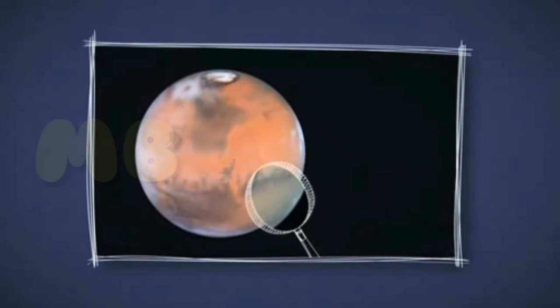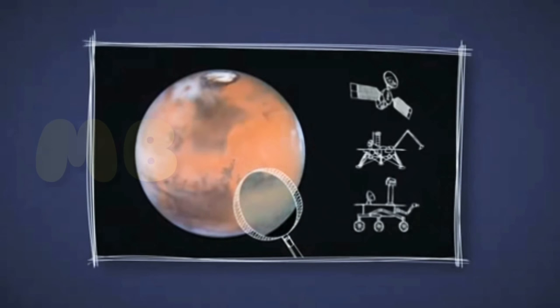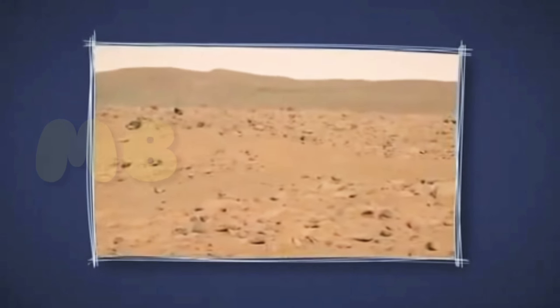But if you get a close-up view, with an orbiter, lander, or rover, you'll see that a lot of Mars is actually more of a butterscotch color.